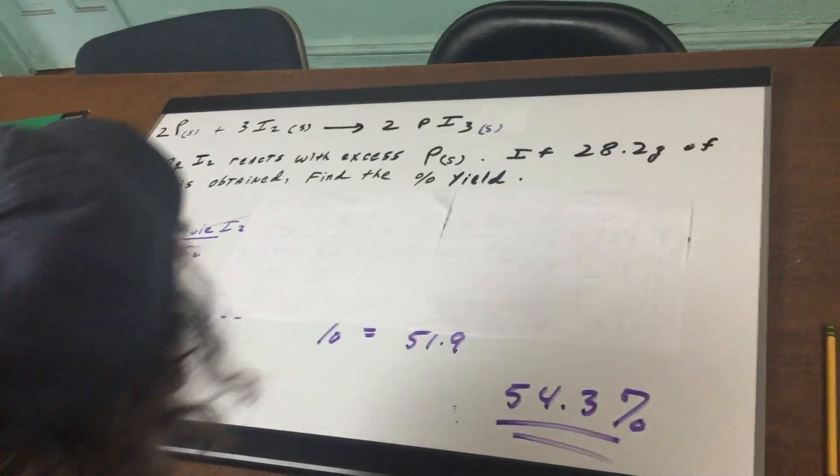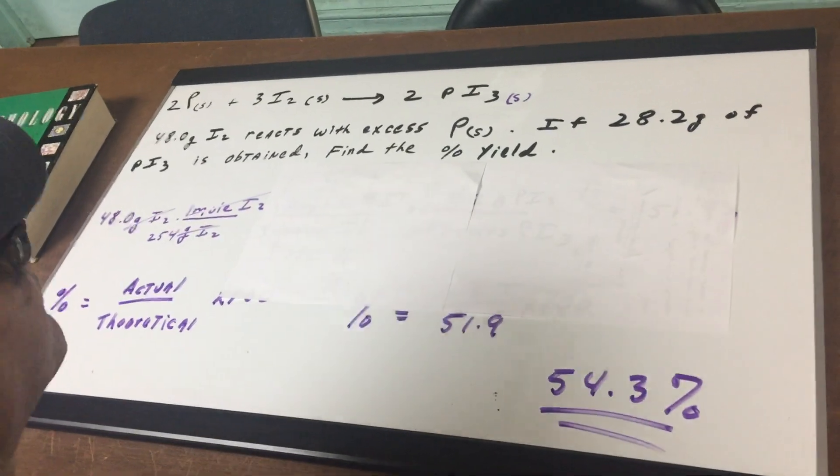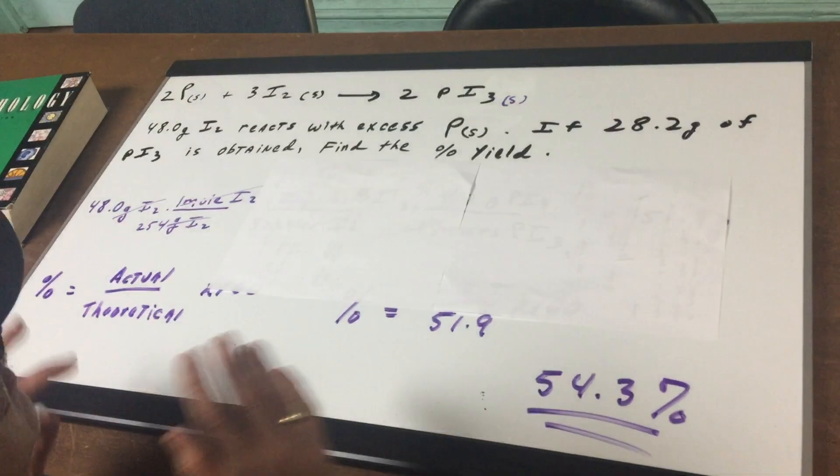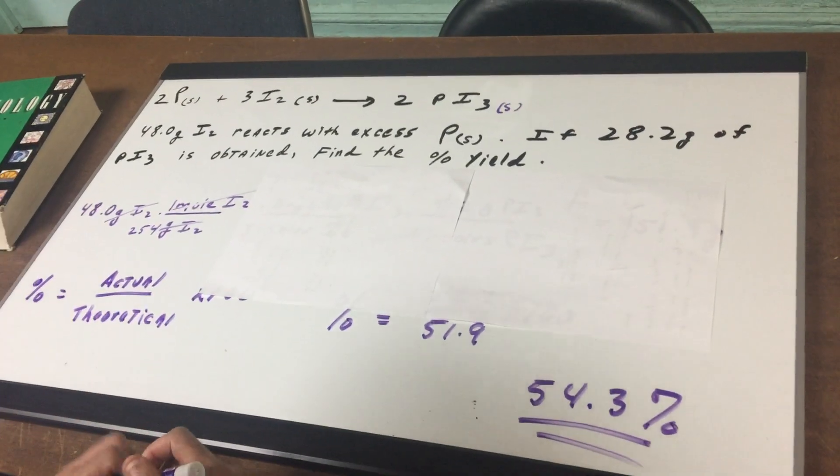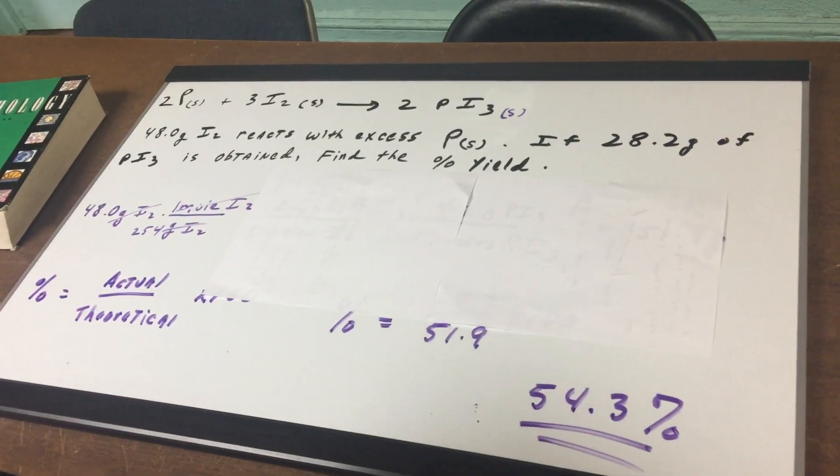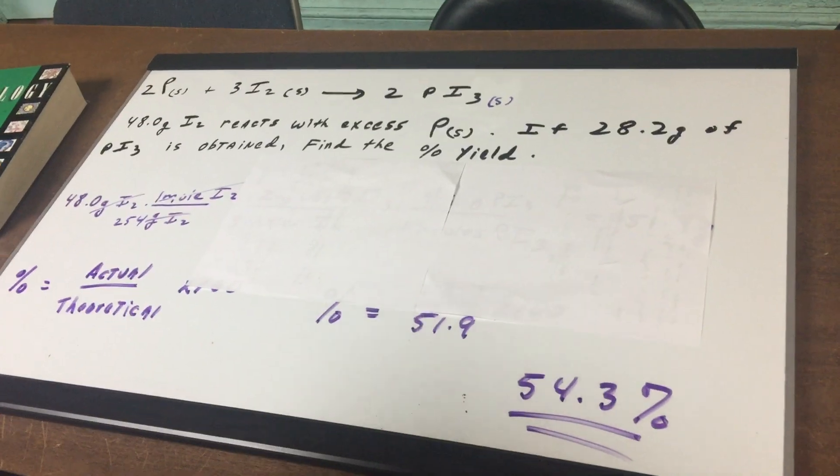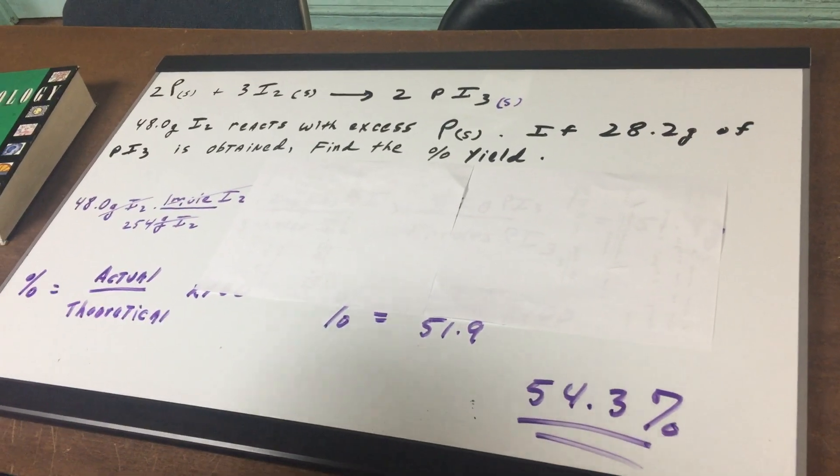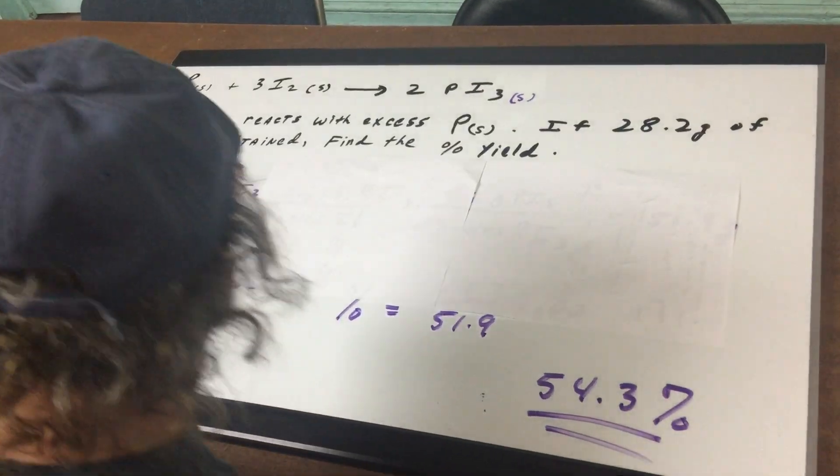We're going to give you two phosphorus reacting with three iodine to give two moles of PI₃. Always make sure that a problem is balanced. This is one of the biggest mistakes that I see general chem kids, the freshmen make, is they forget to see if an equation is balanced. Here I was nice to you and I gave it to you balanced.